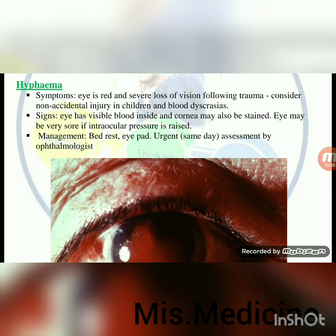Hyphema — symptoms: eye is red, severe loss of vision following trauma. Consider non-accidental injury in children and blood dyscrasias. Signs: eye has visible blood inside; cornea may also be stained; eye may be very sore if intraocular pressure is increased. Management: bed rest, eye pad, urgent same-day referral.